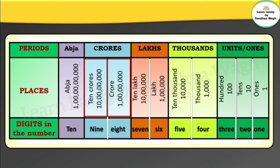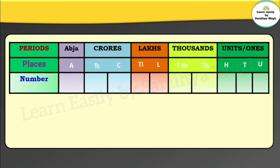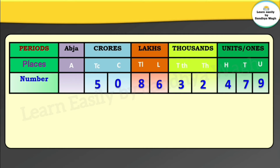The crore period has 8-digit and 10-crore has 9-digit, and abja has 10 digits. Let us take an example to understand things better. We will start reading the number from the left side, one period at a time. The periods are: abja, crores, lakhs, thousands, and units.